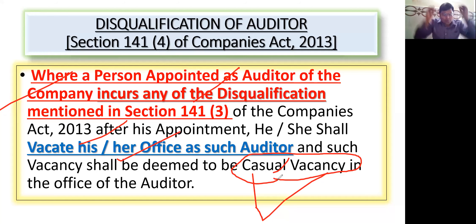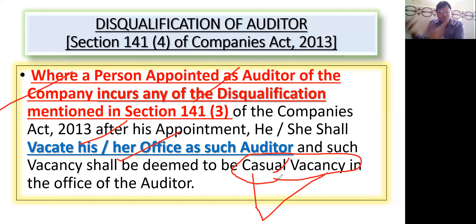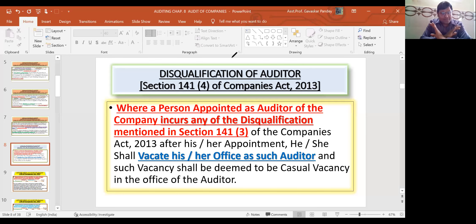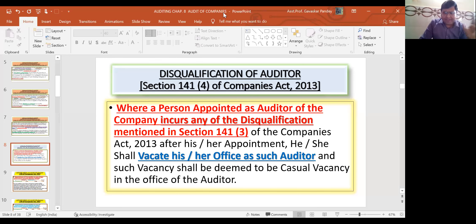What you have learned was A to I — all the disqualifications. If after appointment you learn that a disqualification applies to you, then you have to vacate your office — he or she shall vacate his or her office. And such vacancy shall be deemed to be a casual vacancy in the office of an auditor. So that vacancy is known as a casual vacancy. Section 141 Subsection 4 — if disqualification is discovered after appointment, you leave your office, and that becomes a casual vacancy.